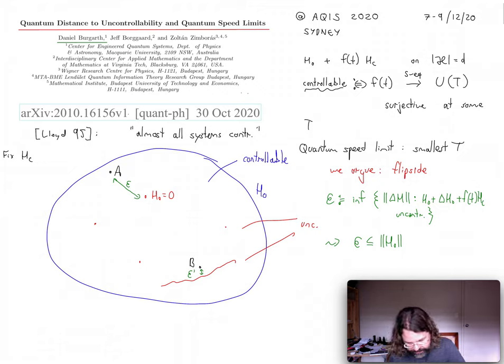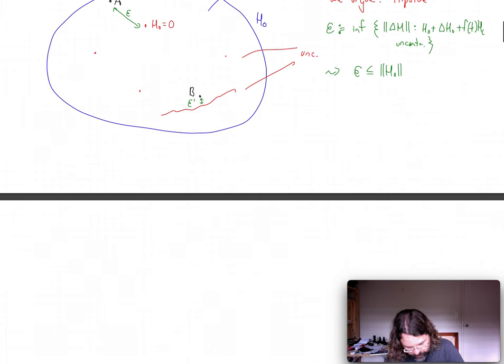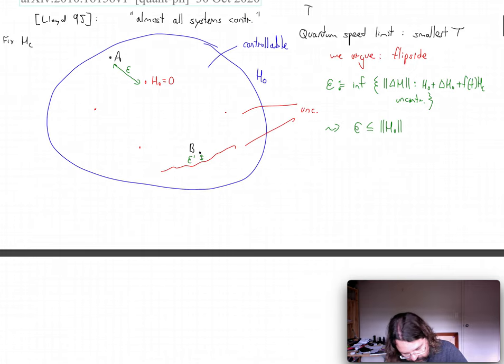And why is that? So this bounds the quantum speed limit. And the reason is that nature needs time to distinguish a controllable from an uncontrollable system.